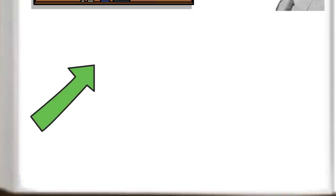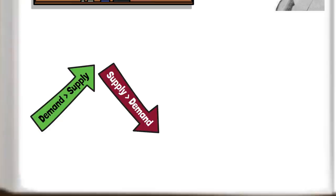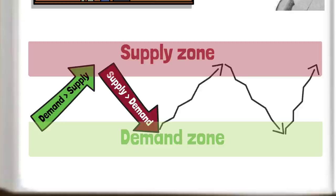If we take supply and demand, when demand is greater than supply, prices will rise to meet this demand, and conversely, when supply is greater than demand, prices fall. Such price action often forms a supply zone and a demand zone. Such zones often signal as areas of distribution or accumulation.